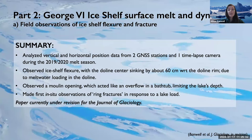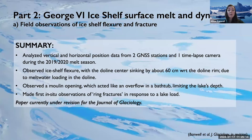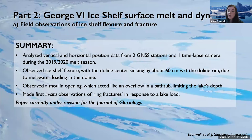A quick summary: we analysed vertical and horizontal position data from two GNSS stations and one time-lapse camera during the huge 2019-2020 melt season. We observed ice shelf flexure with the doline centre sinking relative to the doline rim due to meltwater loading. We observed a moulin opening acting like a bathtub overflow, and made the first in-situ observations of ring fractures. We currently have a paper in revision for the journal Glaciology.